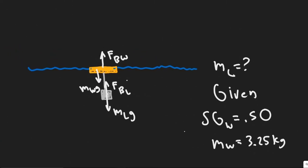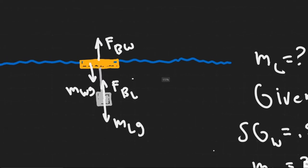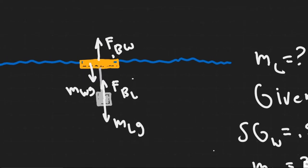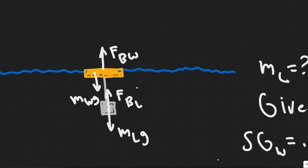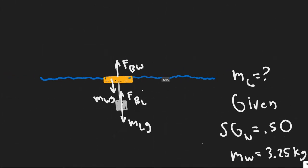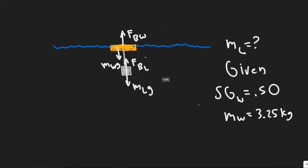As always when you do these problems, you're going to want to draw a free-body diagram. We have the force due to gravity — the weight acting on both the wood and the lead. So that's M_W times G for the wood and M_L times G for the lead. We're also going to have the buoyancy force acting on both of these — the buoyancy force for the lead and the buoyancy force for the wood.